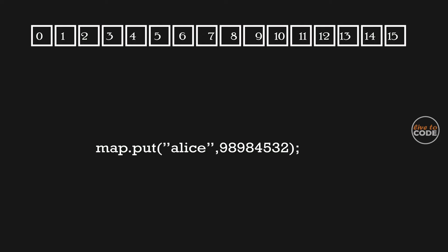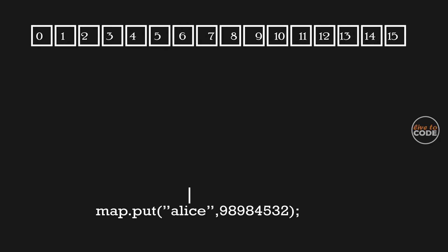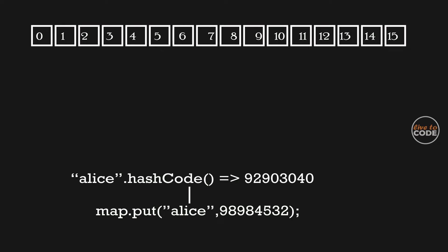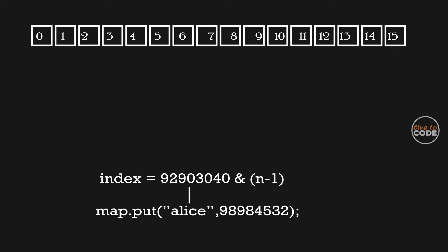Let's assume we have to store the name and contact number of a person. The name will be the key and the contact number will be the value. The hash value will be calculated using the hash code method, which returns some integer value. The index will be calculated from that hash code, where n is the size of the hash table. The index value is calculated using a logical AND operation — here the index value will be zero.